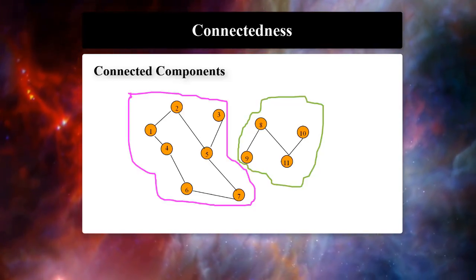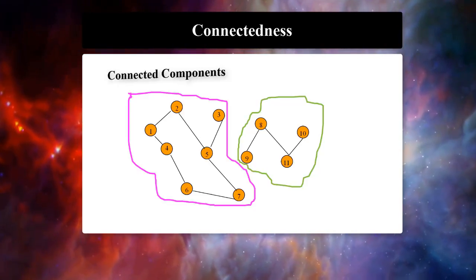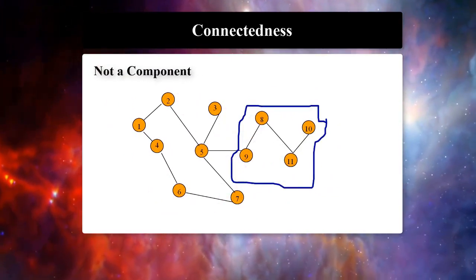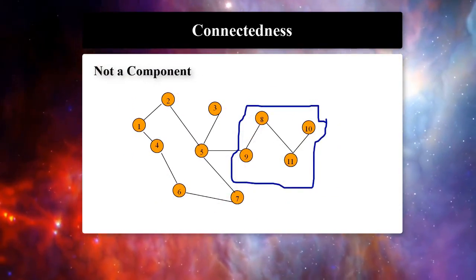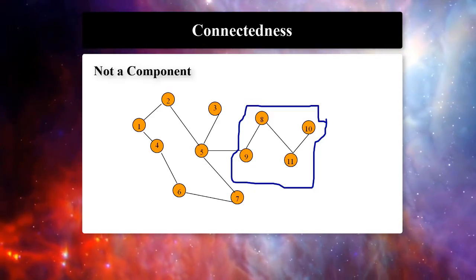Is the graph connected? In this graph, the part separated by blue line is not a connected component.